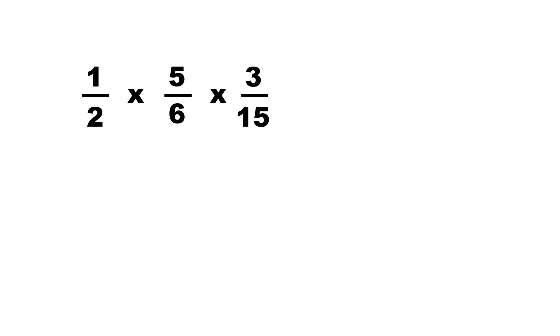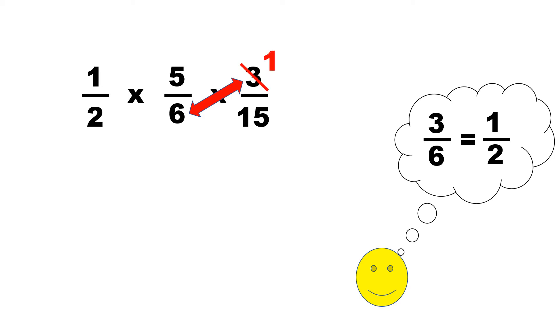So, we could reduce a 3 and a 6, and if we reduce 3/6, it's going to be 1/2. So, we cross out the 3, put a 1, cross out the 6, and put a 2.